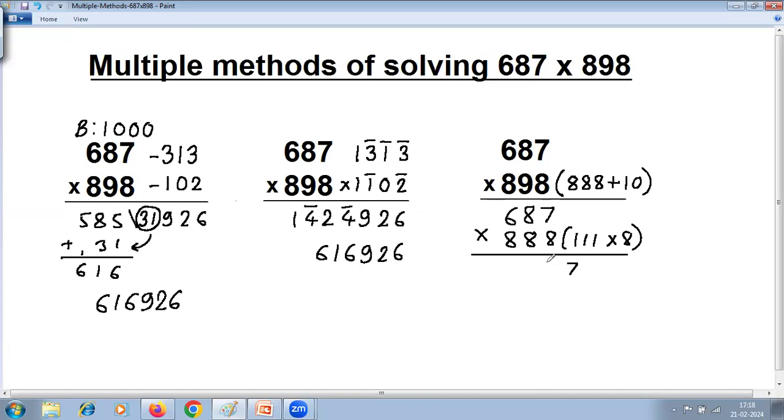7. 8 plus 7 is 15, so 5 carry 1. 6 plus 8 is 14, plus 7 is 21, plus carry 1 is 22. 2 carry 2. 6 plus 8 is 14, plus 2 is 16. 6 carry 1. 6 plus carry 1 is 7. This is the answer of 687 multiplied by 111. Then you have to multiply by 8.